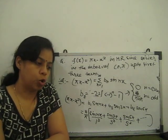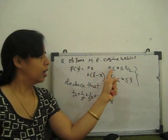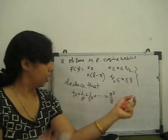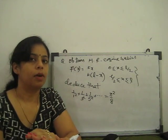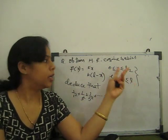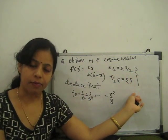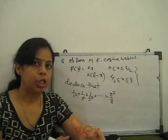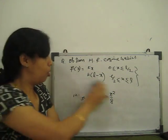Now, an example of half-range cosine series. Given the piecewise function: f(x) = kx for 0 to l/2, and f(x) = k(l − x) for l/2 to l. We must find the half-range cosine series and deduce a result. This is a discontinuous (piecewise) function — the interval breaks into two parts. We need to find a₀ and aₙ for the cosine series.